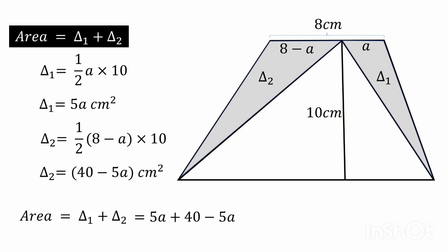Now 5a will be cancelled with minus 5a and the required shaded area is equal to 40 centimeter square which is the required answer.